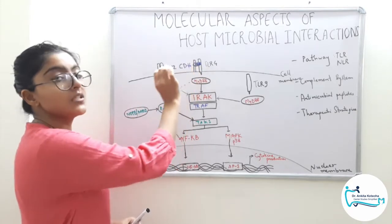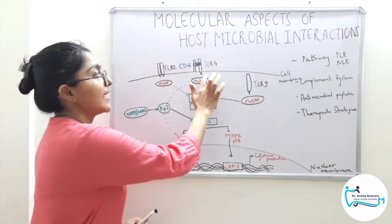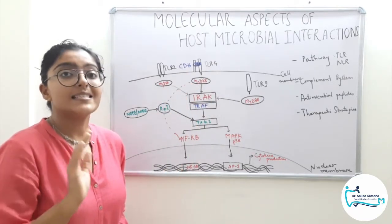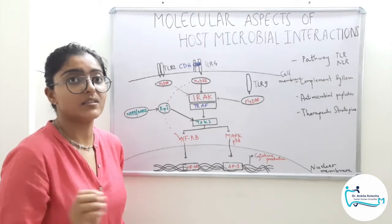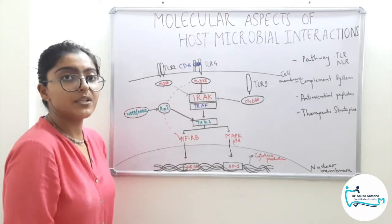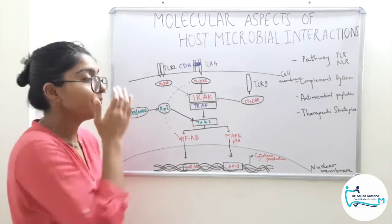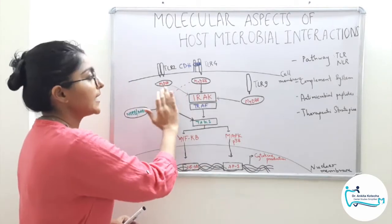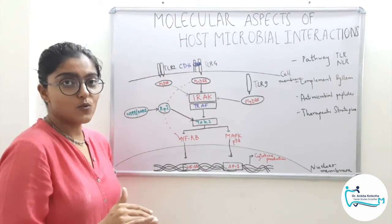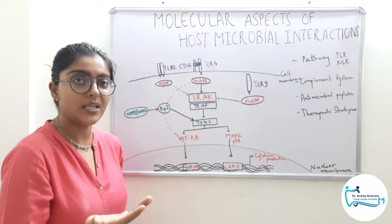Upon binding, there will be direct recognition, leading to activation of the domain at the C-terminal called the TIR domain — Toll/Interleukin-1 receptor signaling domain. Being a signaling domain, it will now recruit a pathway. The most common adaptor protein pathway recruited by all TLRs is MYD88, with the exception of TLR3 and endolysosomally located TLR4. Remember, TLR4 is unique because it can locate on both the plasma membrane and the endolysosome.